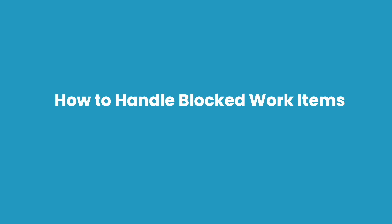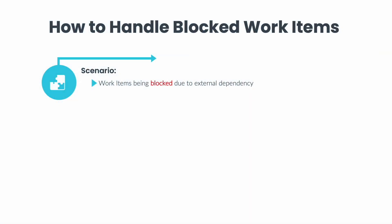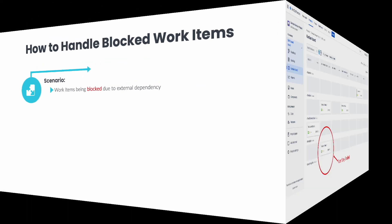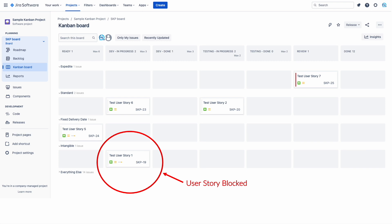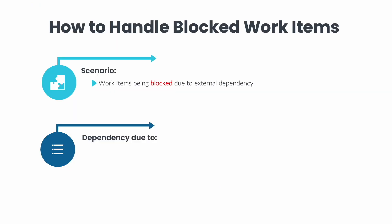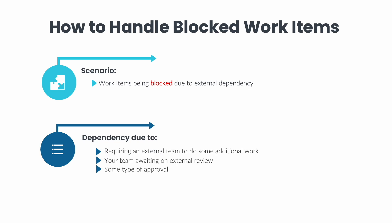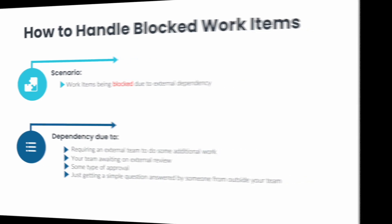How to handle blocked work items. The work item is being blocked due to an external dependency. Your development team started working on a work item and in the middle of their work, they found out they have an external dependency. This means the development team is blocked for that specific user story. The dependency could be anything from requiring an external team to do some additional work, your team awaiting an external review, some type of approval, or just getting a simple question answered by someone outside your team.